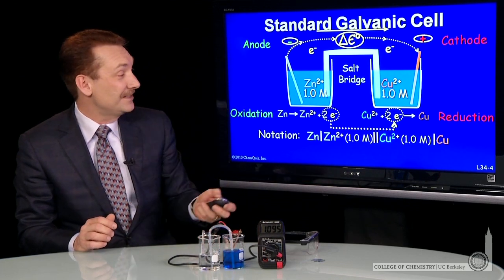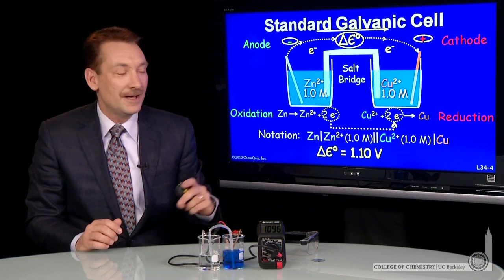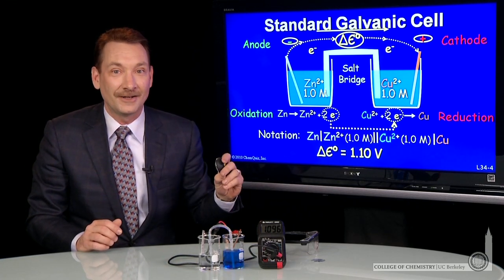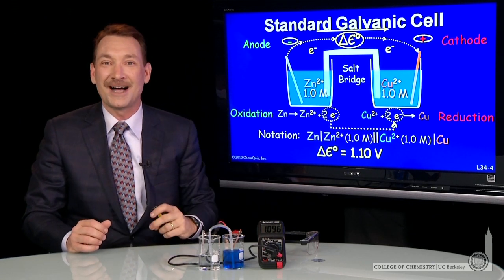And the potential in this case is 1.1 volts. That's the potential for electrons to flow in a galvanic cell, two separated half cells in a redox reaction.